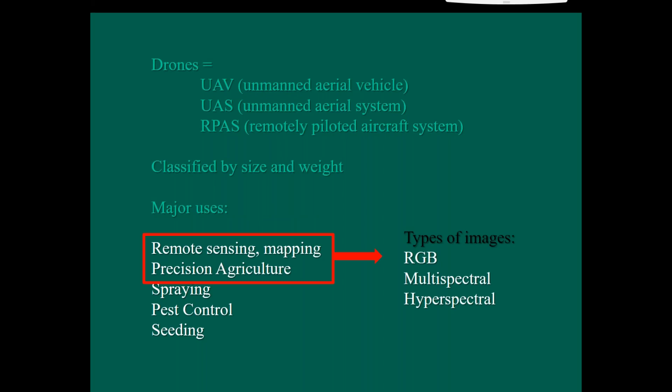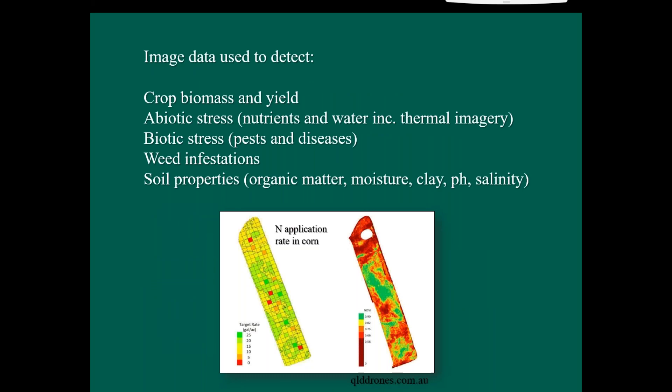And then the types of image data that we acquire from these are anywhere from RGB, which is just simply red, green, blue imagery, which is the same as what you would use in your mobile phone camera, through to multispectral and hyperspectral, getting into some visible and infrared images as well. We'll have a look at these and how they're being used at the moment.